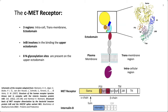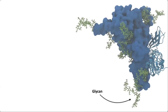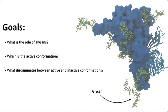Something important is missing from this scheme: the receptor is not just a protein but a glycoprotein. On the ectodomain and the juxtamembrane domain in particular, this receptor has 13 N-glycosylation sites; in the portion relevant for this talk, there are eight. So if we were to look closely at the receptor, it would show these green glycan chains. Among our goals, we need to understand the role of glycans, what active conformations the receptor assumes upon binding with internalin B, and whether it's possible to discriminate between active and inactive conformations.